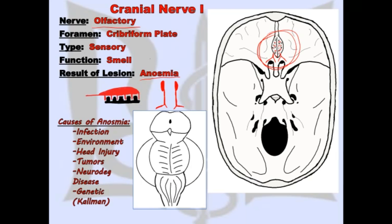As we can see from this diagram of the skull, we have the cribriform plate, also seen here in this diagram. The cribriform plate has olfactory nerve fibers which pierce through the ethmoid bone, and then continue on and link up into what is called the olfactory bulb.